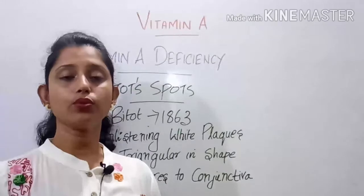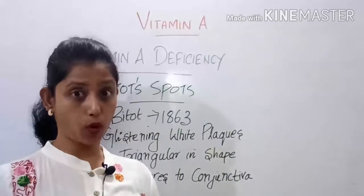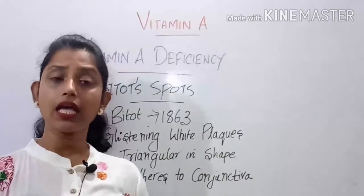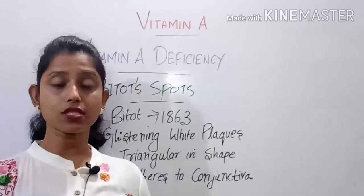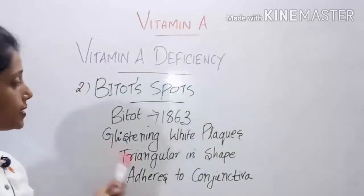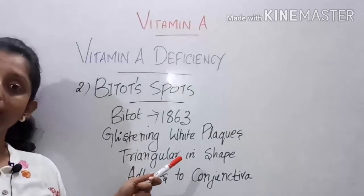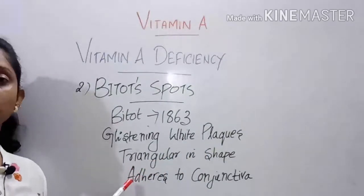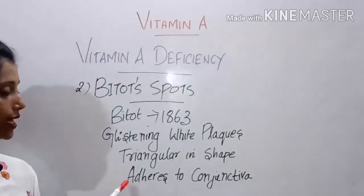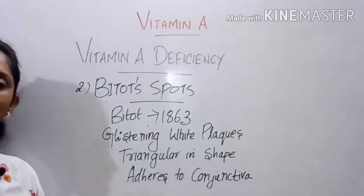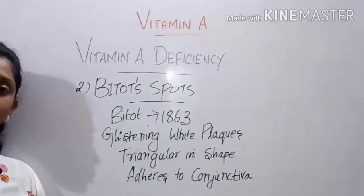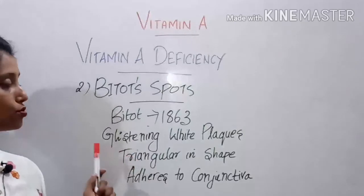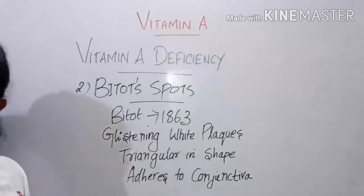The second condition due to Vitamin A deficiency is Bitot's spot, a common question in many competitive examinations. It was first described by Bitot in 1863. It is a glistening white plaque, triangular in shape, found on the conjunctiva.